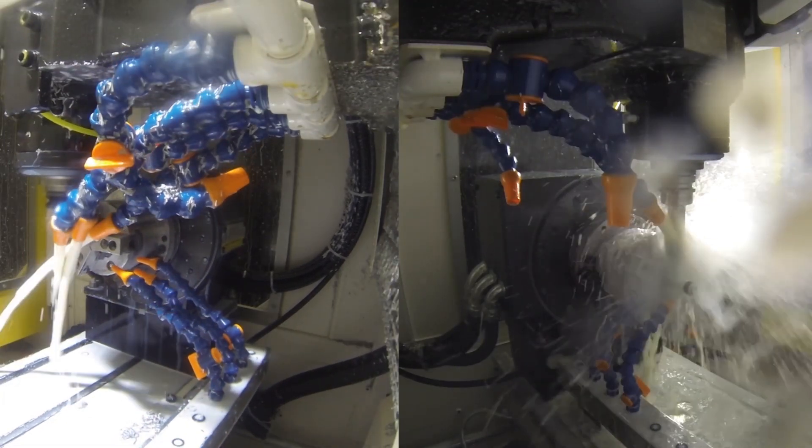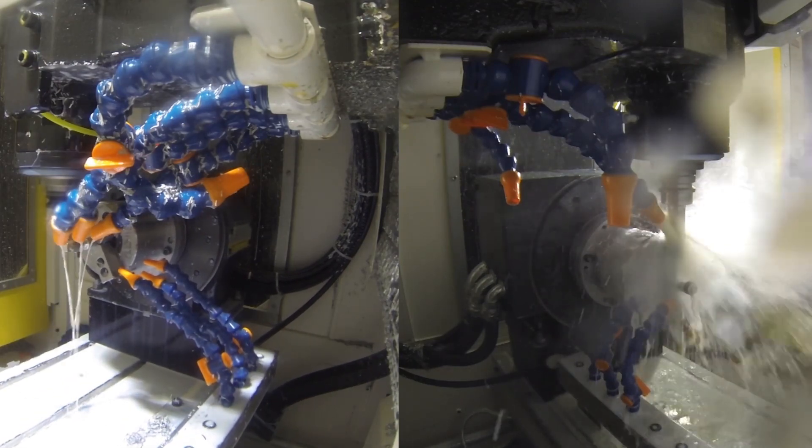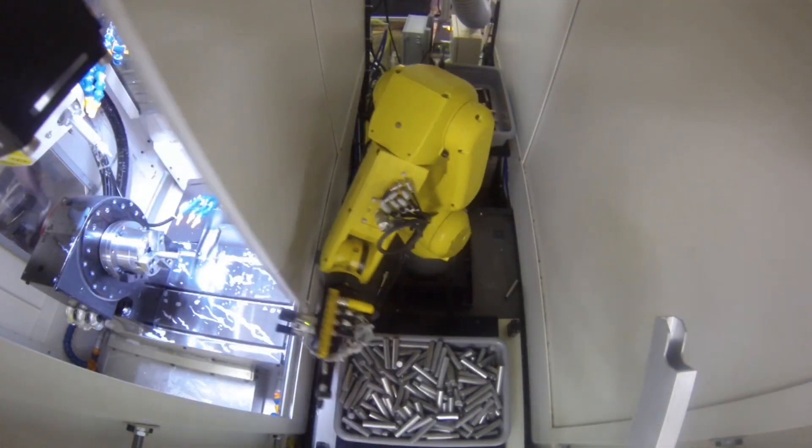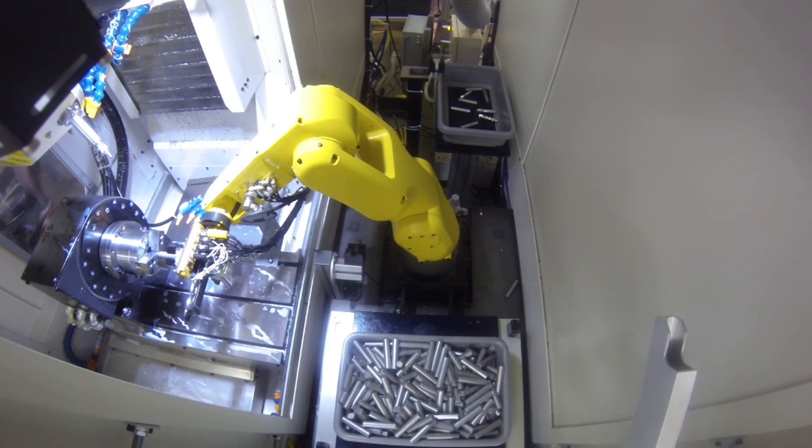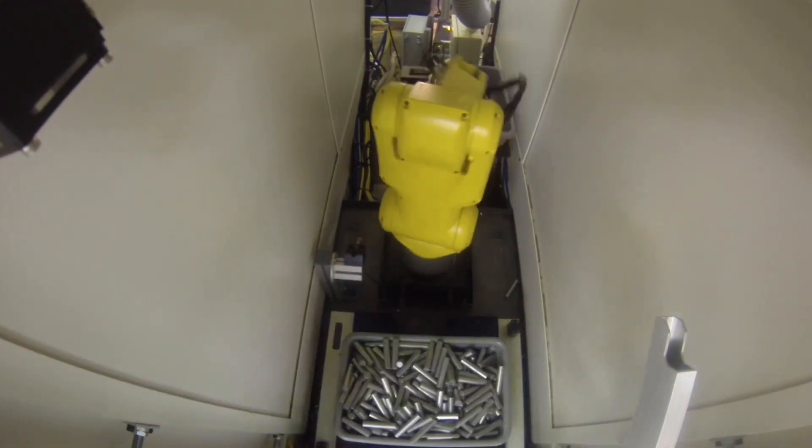Once the machining cycle is over and a finished part is produced, the robot again unloads the first RoboDrill and loads it with a raw part, loads the second RoboDrill with a partially finished part, then unloads the finished part to a bin out of the system.